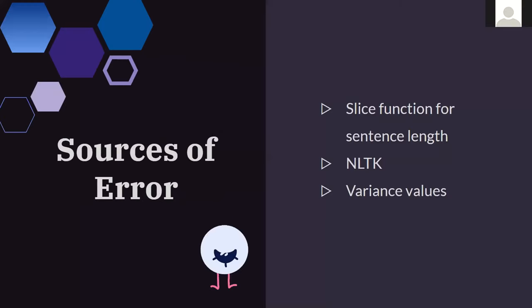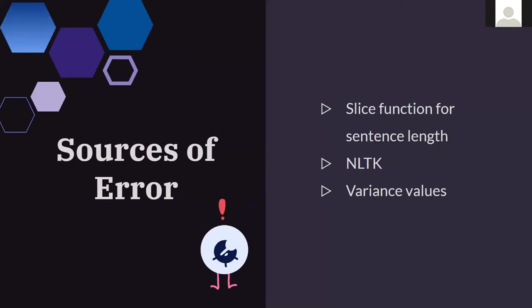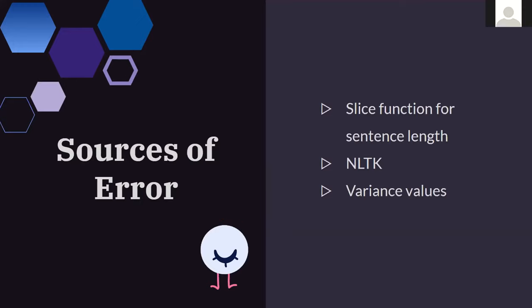After using this approach, we discovered three outliers in the fake data that need further investigation. Sources of error include the slice function to measure length of sentences where decimal points were treated as the end of a sentence. NLTK may have identified the wrong part of speech in some cases — in the future we'd like to experiment with other systems.